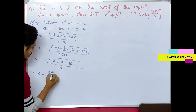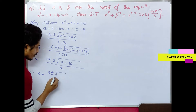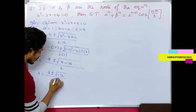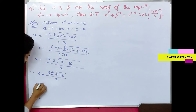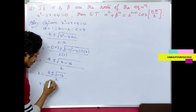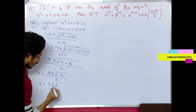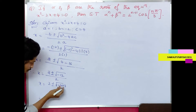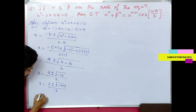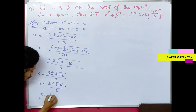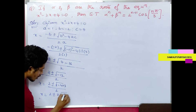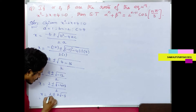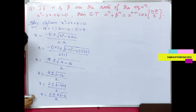Therefore x = (2 ± √(-12)) / 2. Now √(-12) = √(4·3·(-1)) = 2√3 · i. So x = (2 ± 2i√3) / 2.